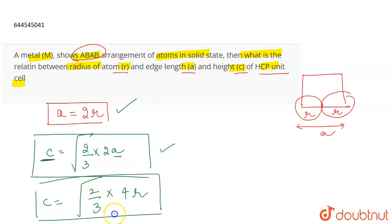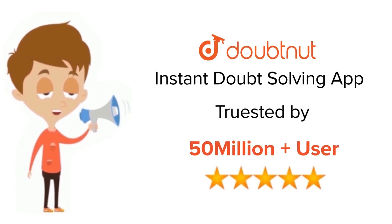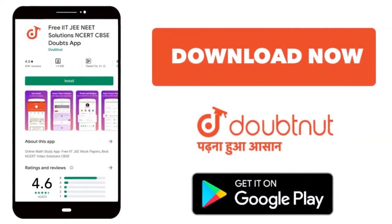So this is another relationship between the height and the radius. So these are the desired relations that were asked to us in the question. That's all for the question. For class 6 to 12, IIT-JEE and NEET level, trusted by more than 5 crore students. Download Doubtnit app today.